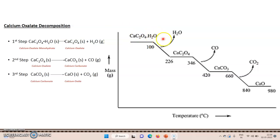After 100°C, the compound loses its water of hydration and is converted to anhydrous calcium oxalate. By around 226°C, nearly all the water of hydration is lost and the compound is now anhydrous calcium oxalate. From this first step, we can see that TGA is used to predict decomposition temperature and give an idea of the thermal stability of a compound. Calcium oxalate monohydrate decomposes into water and calcium oxalate after 100°C.